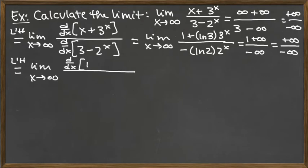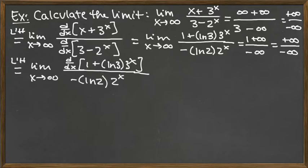The only lower term we have left is the plus 1 on top. On the bottom, we've already fixed our situation — it's just a constant multiple of an exponential. And we've got to take the derivative of it.